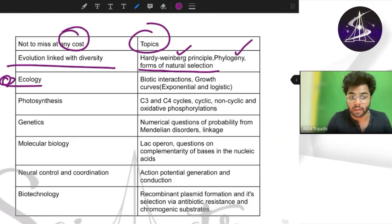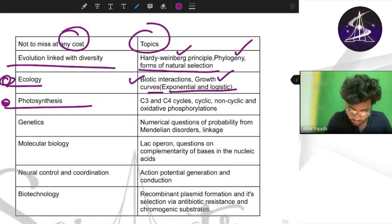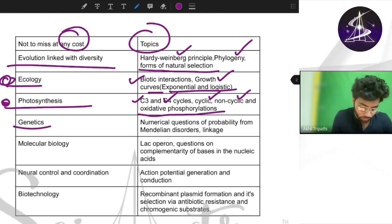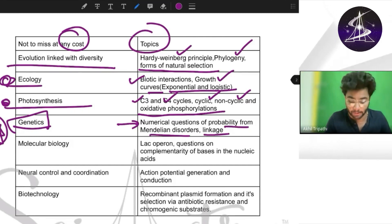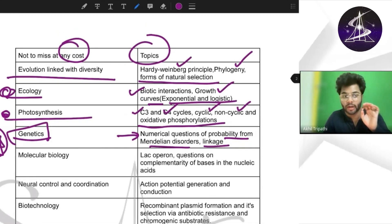In ecology, the most important topics are biotic interactions and growth curves like exponential and logistic growth. Then comes photosynthesis - the important topics you should not miss at any cost are C3 and C4 cycle, then cyclic and non-cyclic, and oxidative phosphorylation. Coming to genetics, even non-bio students should do genetics for sure. Also, numerical type of questions come from probability in Mendelian disorders, linkages, etc. This I am telling for NEST.